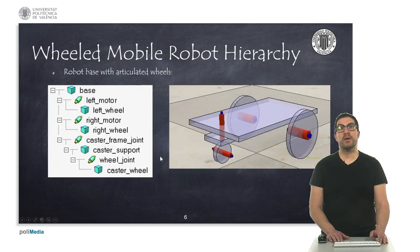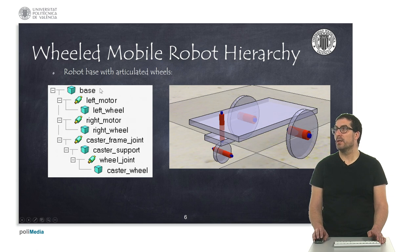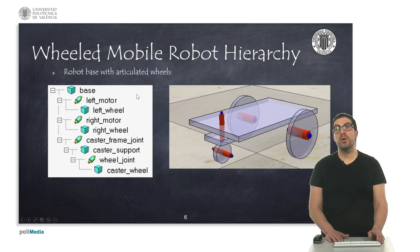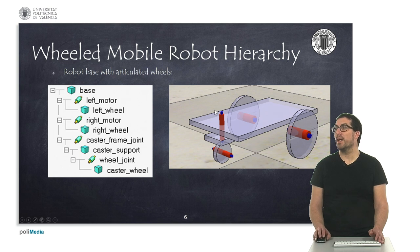In this other example, we will see what we need to use in the case of a wheeled mobile robot. In this case, the hierarchically superior element is the robot base, which is this object here and corresponds to this object here. The base includes two joints corresponding to the left and right wheel joints, which are this one and this one, corresponding to these two joints. Each of the joints has another link which has the wheel shape, corresponding to these two objects here.